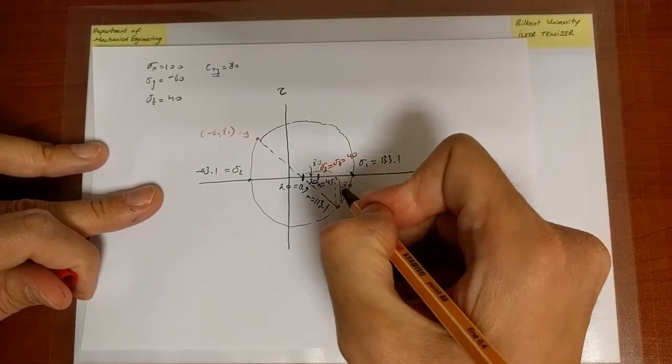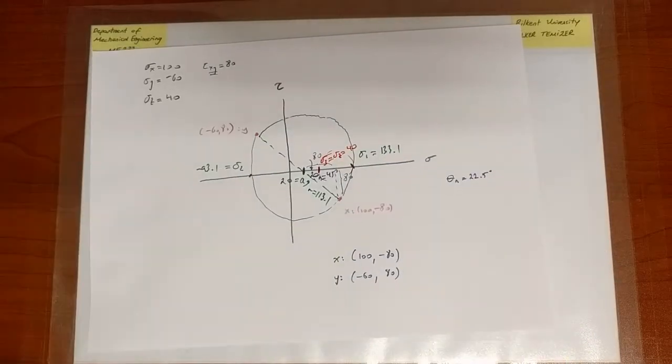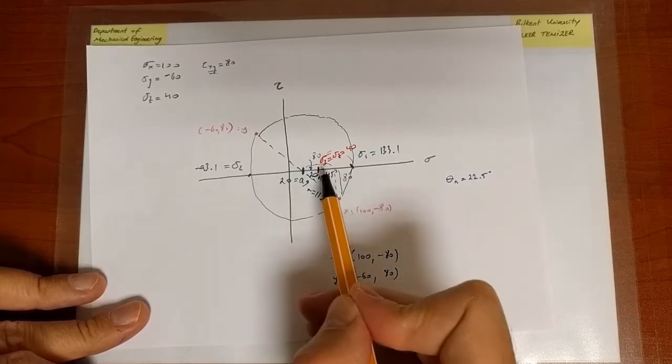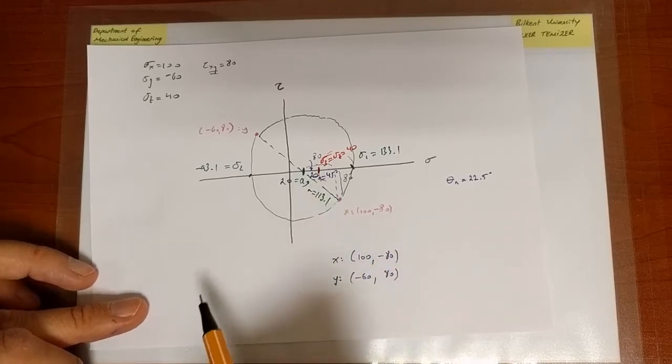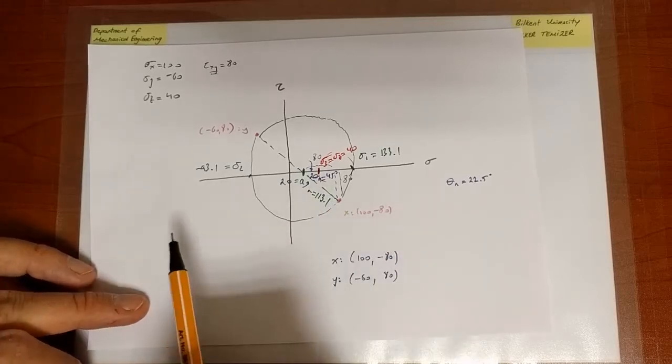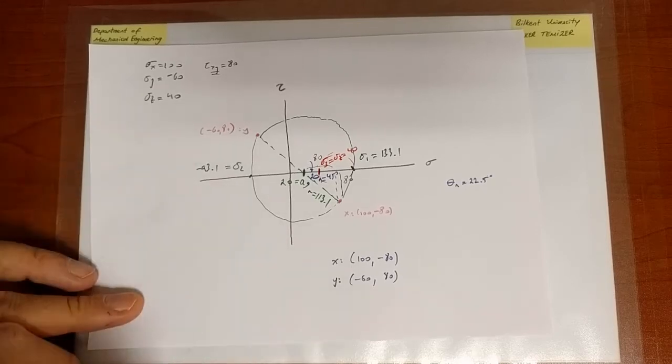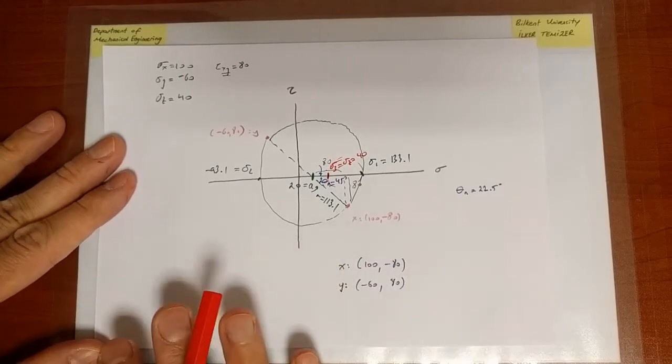So there will be two other Mohr circles which are associated with the 3-2 and the 3-1 values. I'm not drawing those, but we've done everything essentially with the Mohr circle that's equivalent to what we've done with the previous method. Again, the previous one is more general. Now that's one comment.